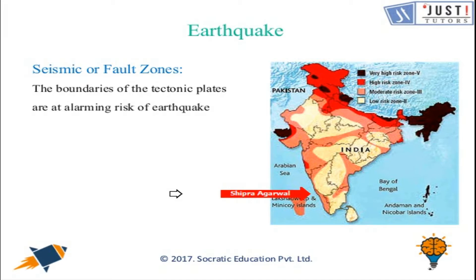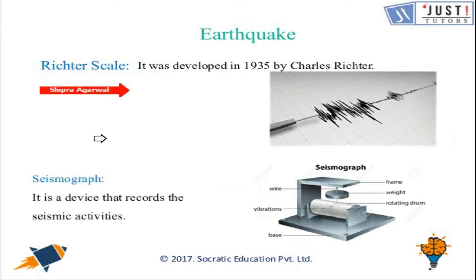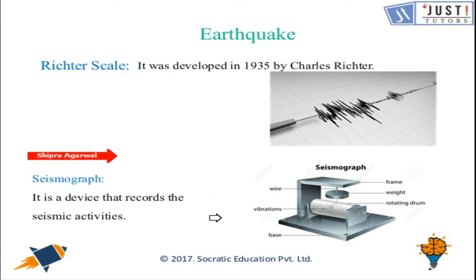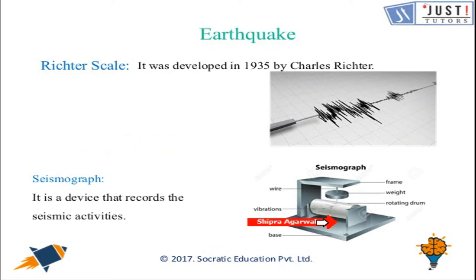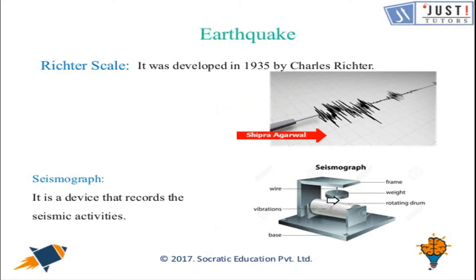Damages due to earthquakes can include the collapsing of man-made structures. Earthquakes can also result in tsunamis, which can cause large-scale damage. To measure earthquakes we have two scales: the Richter scale and the seismograph. The Richter scale uses a logarithmic scale, while the seismograph is a machine with an oscillator that shows waves — high waves on the seismograph indicate a high-magnitude earthquake.